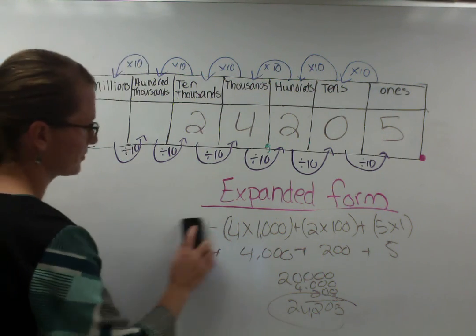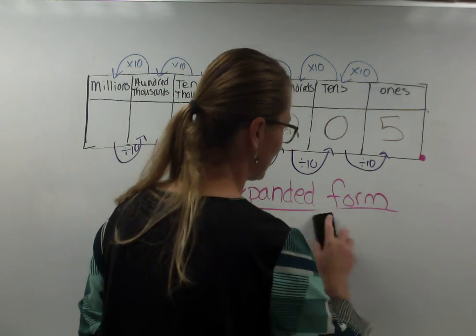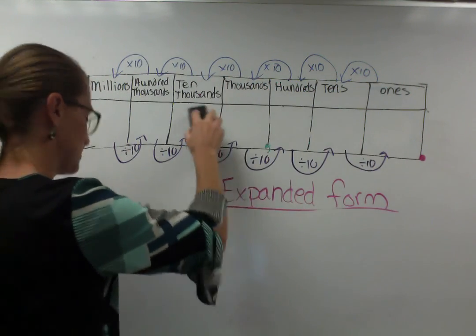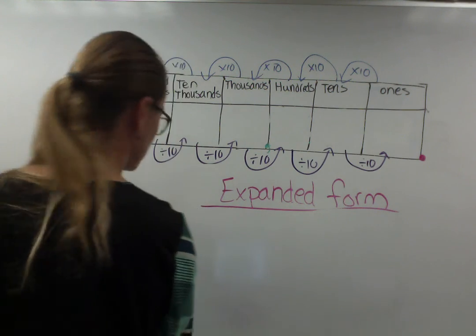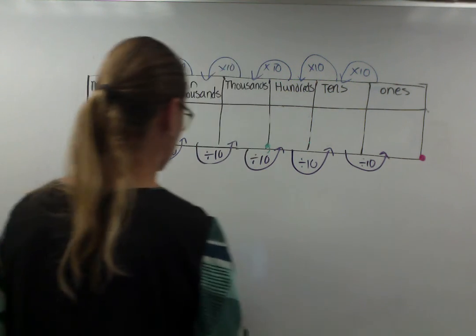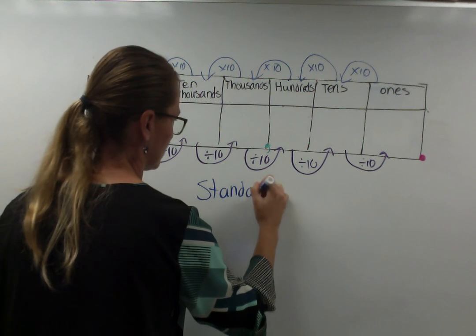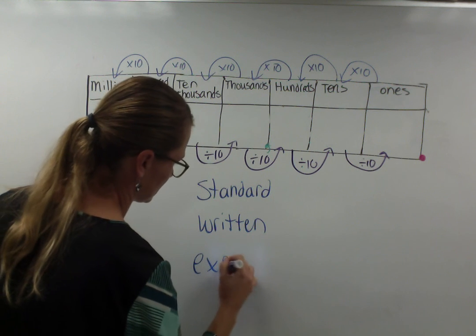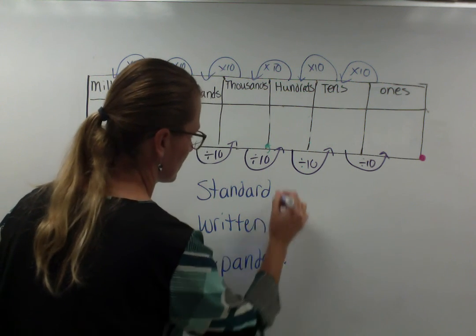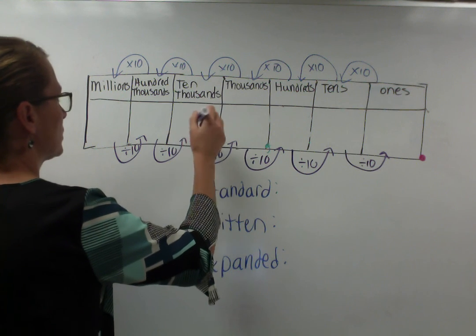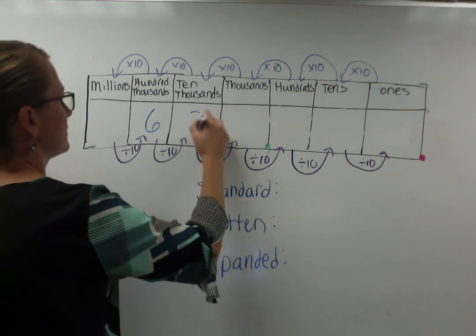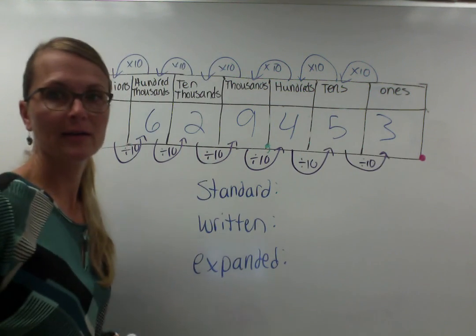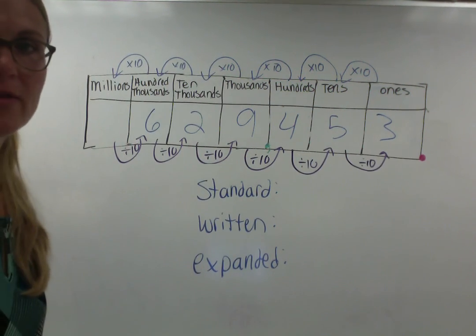What I would like you to do for your problem of the day on your whiteboard and have it ready to show me when you get to the Teacher Center is I want you to write this number in standard, written, and expanded form. These three forms. I want you to write the number 629,453. There it is. You can pause it while you're doing it. Good luck.